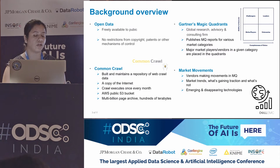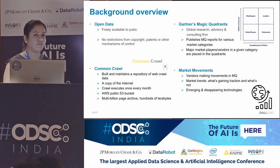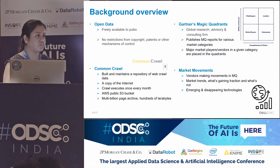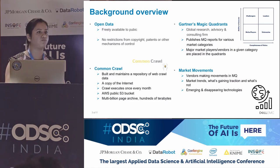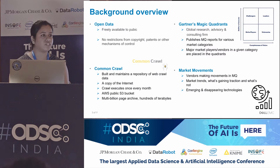Common Crawl is a non-profit organization that built and has constantly been maintaining a repository of web crawl archive data. They've been doing this for more than 10 years. They have this web crawl archive data available in Amazon's public S3 bucket. A crawl is executed once every month and at the end of the month the archive for that month is posted in this repository. In a sense, it's like a copy of the internet — it has billions of web pages archived in it, definitely hundreds of terabytes of data in size.